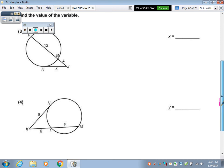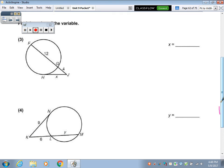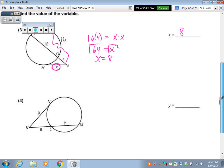Alright, two more, just to get the idea of it. So look at this number three. You've got the whole, which is 16. So whole times outside. And on the second part of it, the whole piece is X. So you've got whole times outside, whole times outside. So X times X, X squared. Square root of both sides. So you get X equals 8. Alright, it's still whole times outside, whole times outside. But the whole and the outside are the same. So you're multiplying by itself. And that's what it means to square it.